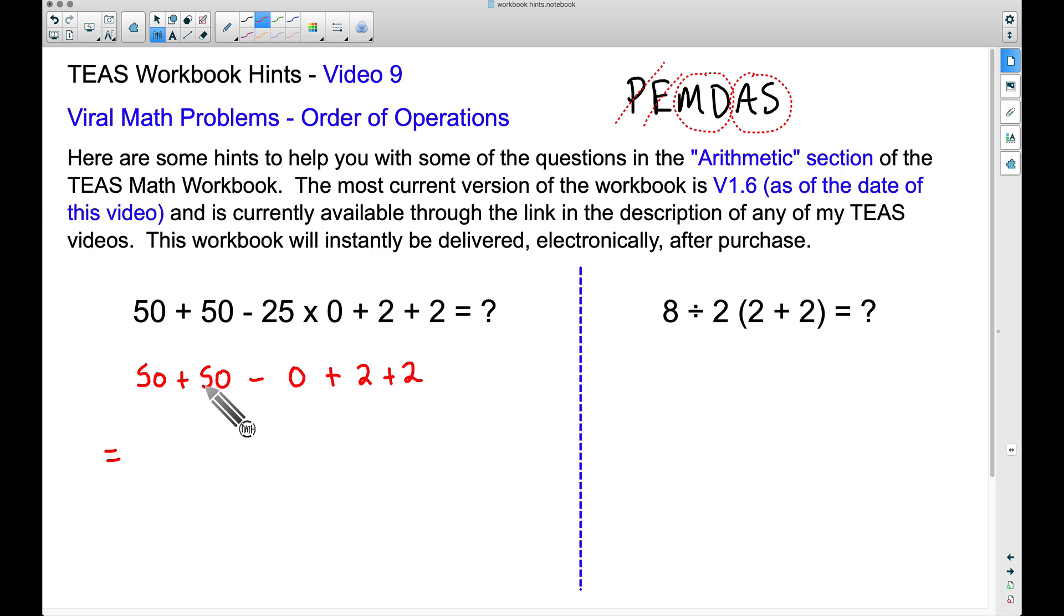Working this out now, all we have is addition and subtraction. We can go from left to right to get our final answer: 50 + 50 is 100, minus 0 is still 100, plus 2 is 102, plus 2 more gives us 104. That is our final answer for that question.